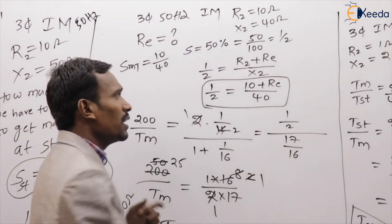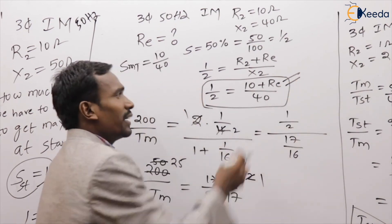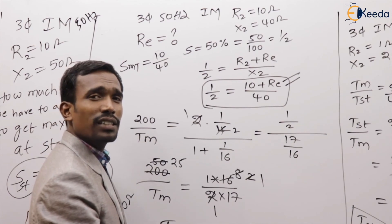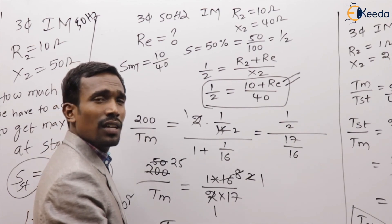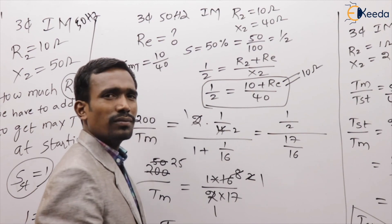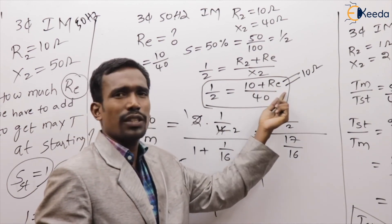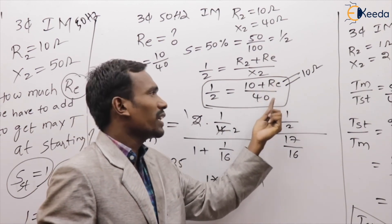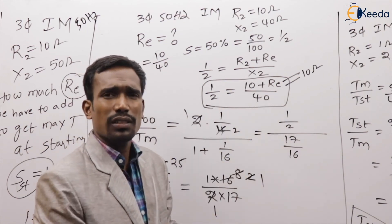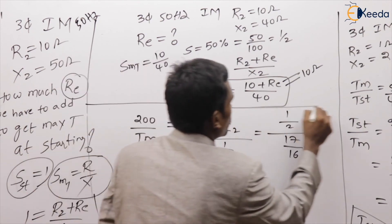Solving: (10 + R_E) / 40 = 1/2, so 10 + R_E = 20, thus R_E = 10 ohms. With 10 ohms added: 20/40 = 1/2. Correct — extra resistance required is 10 ohms.